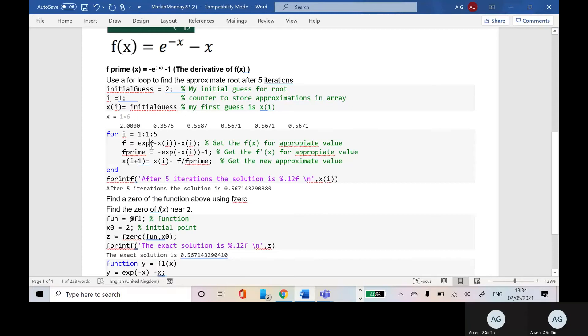So that'll be, just go over that. That'll be e to the minus 2 minus 2, and f prime would be minus e to the minus 2 minus 1.